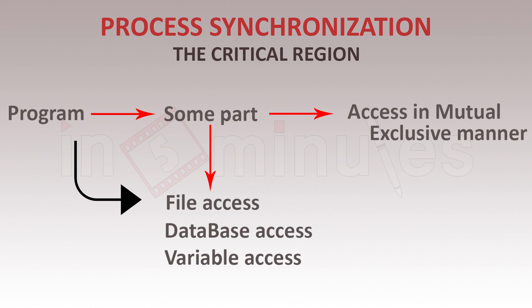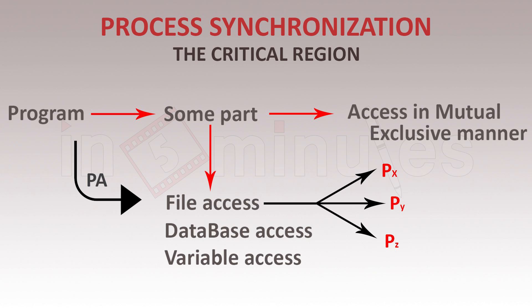This kind of access requires special attention. For example, when a program is accessing a particular file, that file might also be used by 10 other processes. If process A changes file X, then Y and Z would be affected, which we don't want. Hence, process A requires mutual exclusion so only it can access and modify the file, and then others can access it later. The same applies to database access or variable access.